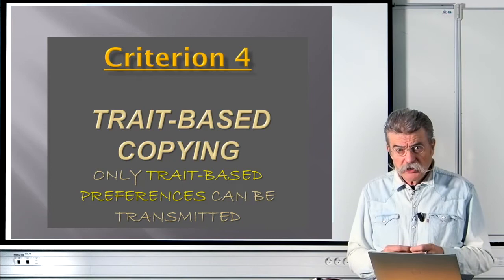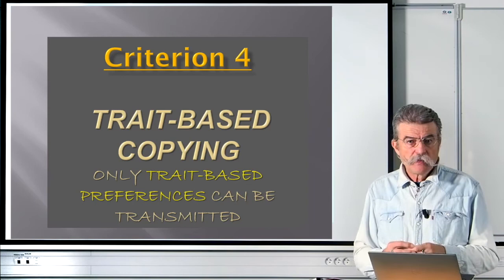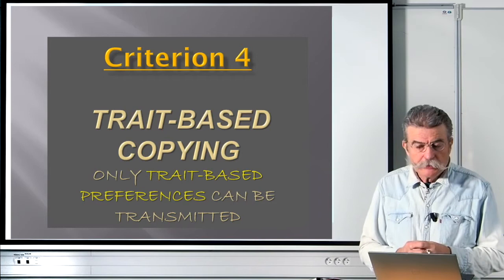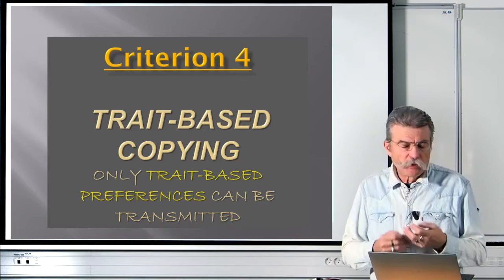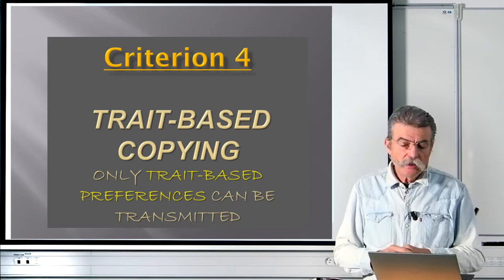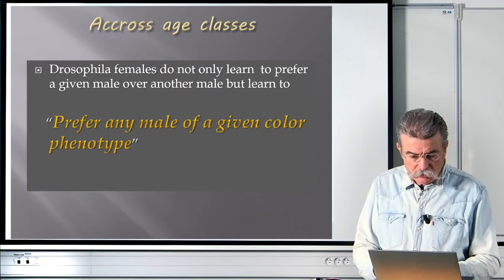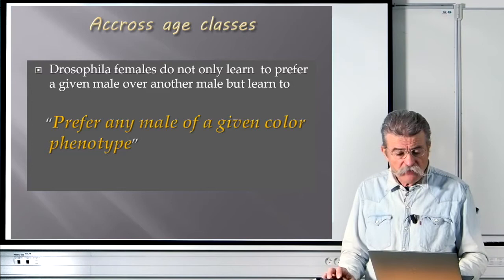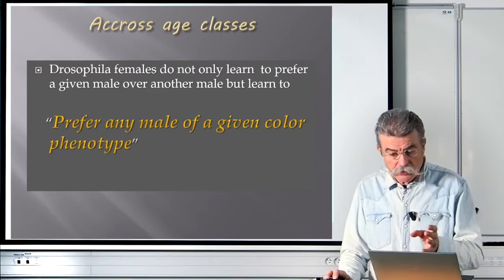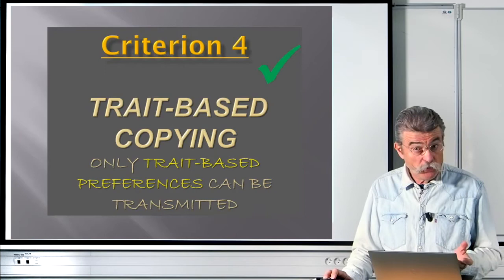Criterion 4 is about the type of learning. Females might learn to prefer male A over male B, which is interesting but not useful for culture, because those specific males will be dead by the next generation and nothing can be transmitted. But if they learn to prefer males of the phenotype of A — green over pink in our case — then this can be transmitted along a long transmission chain. Experiments demonstrated that Drosophila females do not only learn to prefer a given male over another, but learn to prefer any male of a given color — green males over pink males. Criterion 4 is fulfilled.